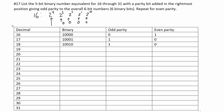For 19, we just have 18 plus 1, so that's 1 0 0 1 1. We can see that we have an odd number of ones, so we are going to have a 1 for our even parity and a 0 for our odd parity.